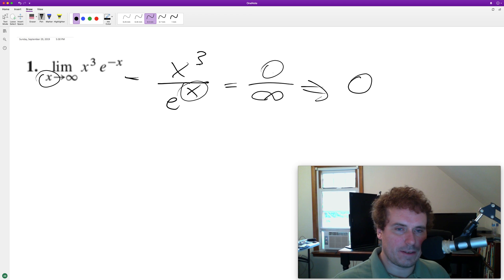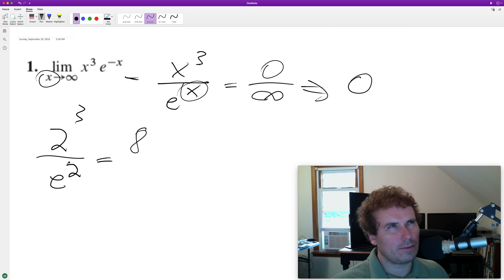And you can kind of think of this here, so like 2 cubed over e to the 2. So, this is equal to 8. E is 2.718, which would make this roughly about 8.